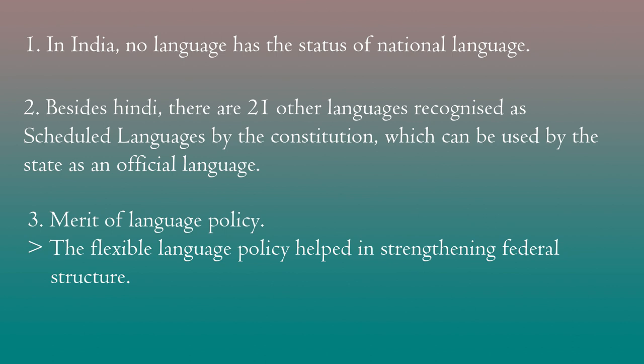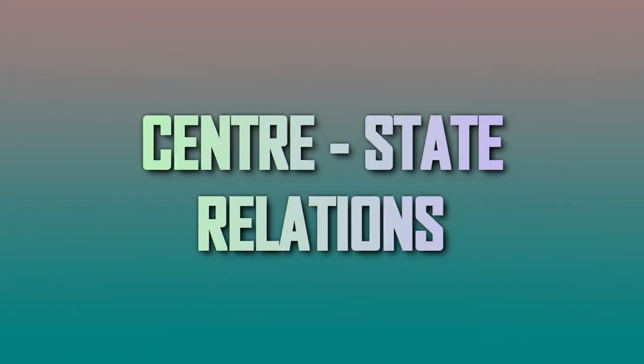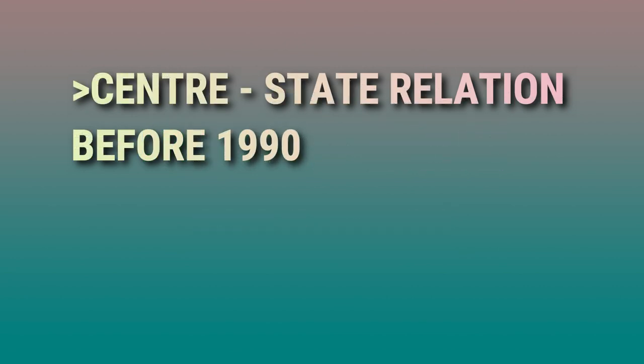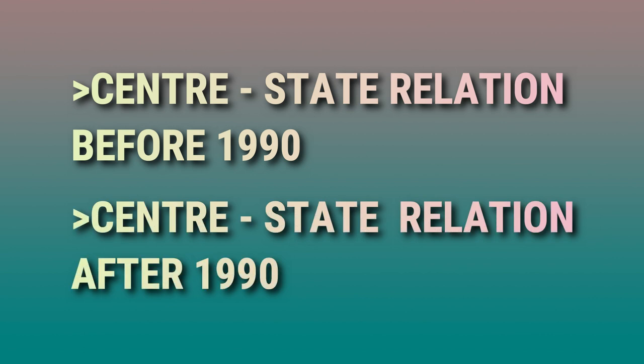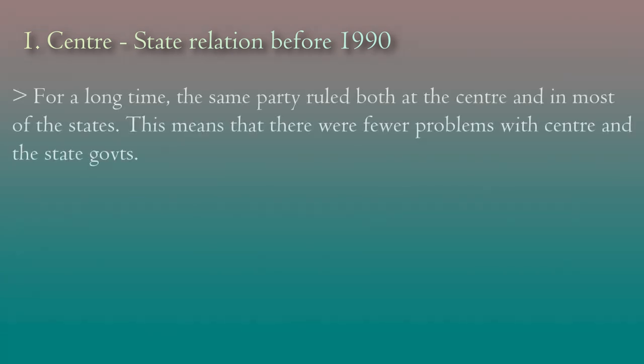So we discussed two points: one is linguistic states — after independence, states were created on the basis of language. Second is language policy — no language has the status of national language; 22 languages are recognized as scheduled languages. The third point is center-state relations. We can divide this into two periods: center-state relations before 1990, and center-state relations after 1990. Before 1990, for a long time the same party ruled both at the center and in most of the states, meaning there were very few problems between center and state governments.